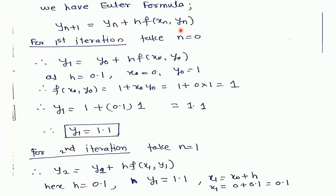Using the Euler formula y_{n+1} = yₙ + h · f(xₙ, yₙ), for the first iteration we take n = 0. Putting n = 0 gives y₁ = y₀ + h · f(x₀, y₀). With h = 0.1, x₀ = 0, and y₀ = 1, we calculate f(x₀, y₀) = 1 + x₀ · y₀ = 1 + 0 · 1 = 1. Substituting all values gives y₁ = 1 + 0.1 · 1 = 1.1. This is the solution at point x₁.